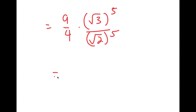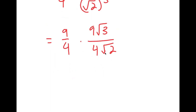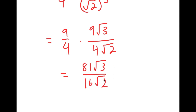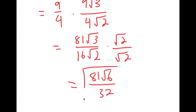The square root of 3 to the power of 5 equals 9 root 3, and you can get this by simply multiplying the square root of 3 five times. The square root of 2 to the power of 5 equals 4 root 2. So I have 9 over 4 times 9 root 3 over 4 root 2, which equals 81 root 3 over 16 root 2. Since we don't want any radicals in the denominator, I multiply by the square root of 2 over the square root of 2, giving 81 root 6 over 32. So this is my answer.